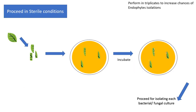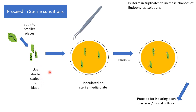Now proceed to isolation, keeping in mind that everything must be done aseptically under sterile conditions. Take your surface-treated sample and cut it into smaller pieces using a sterile scalpel or blade — this applies whether you are working with a leaf, root, or stem. Then use forceps to lift the pieces and inoculate them onto a sterile media plate.